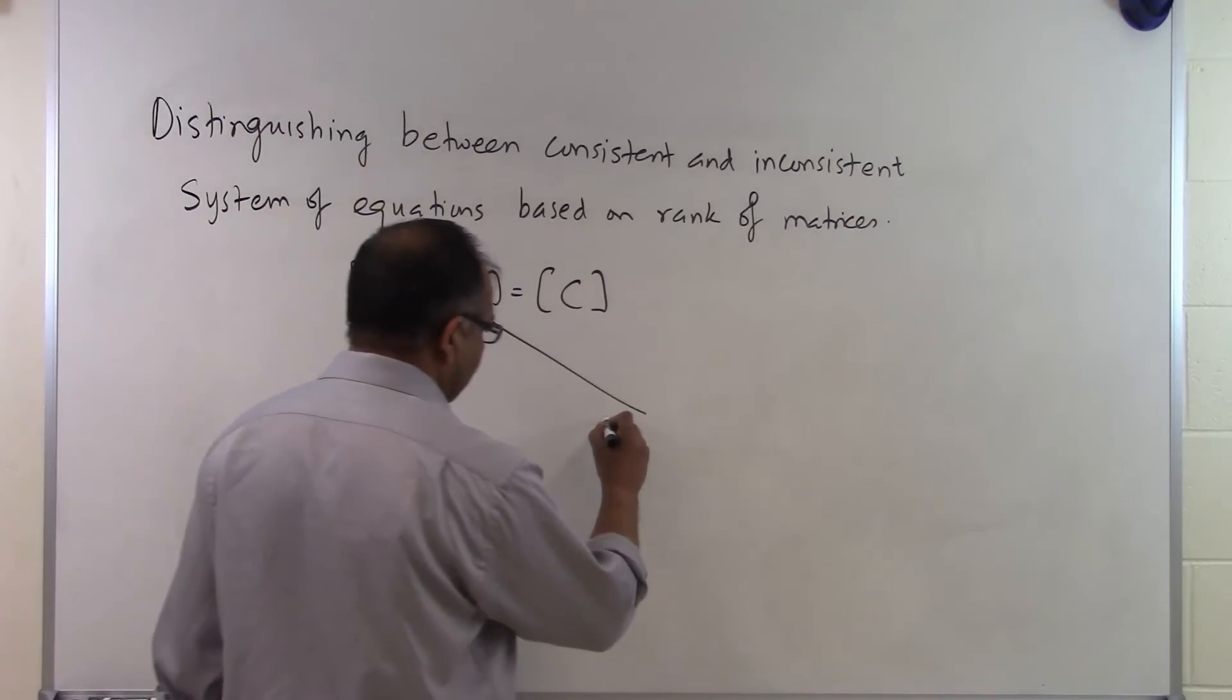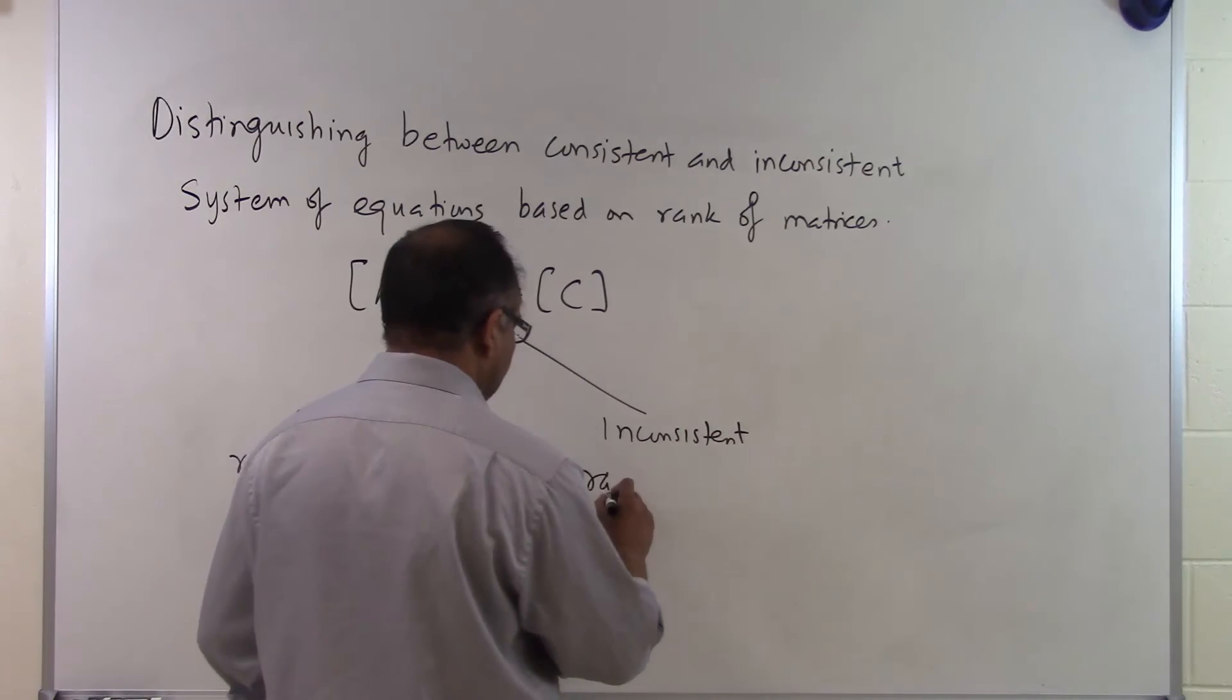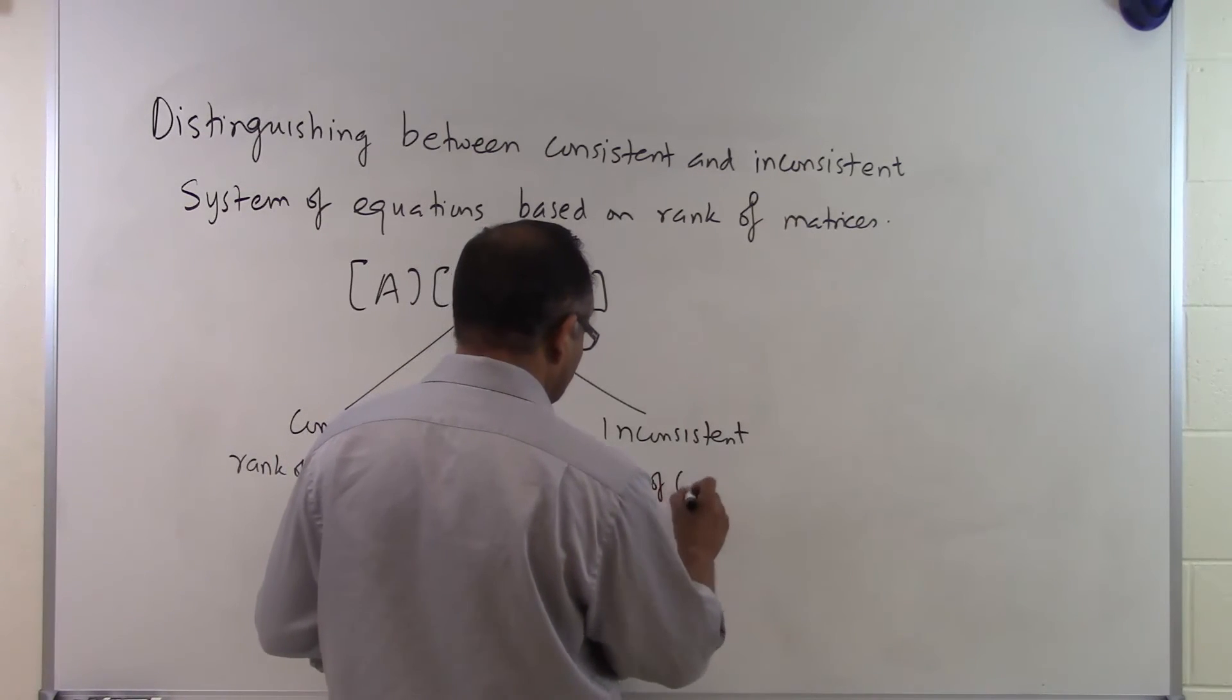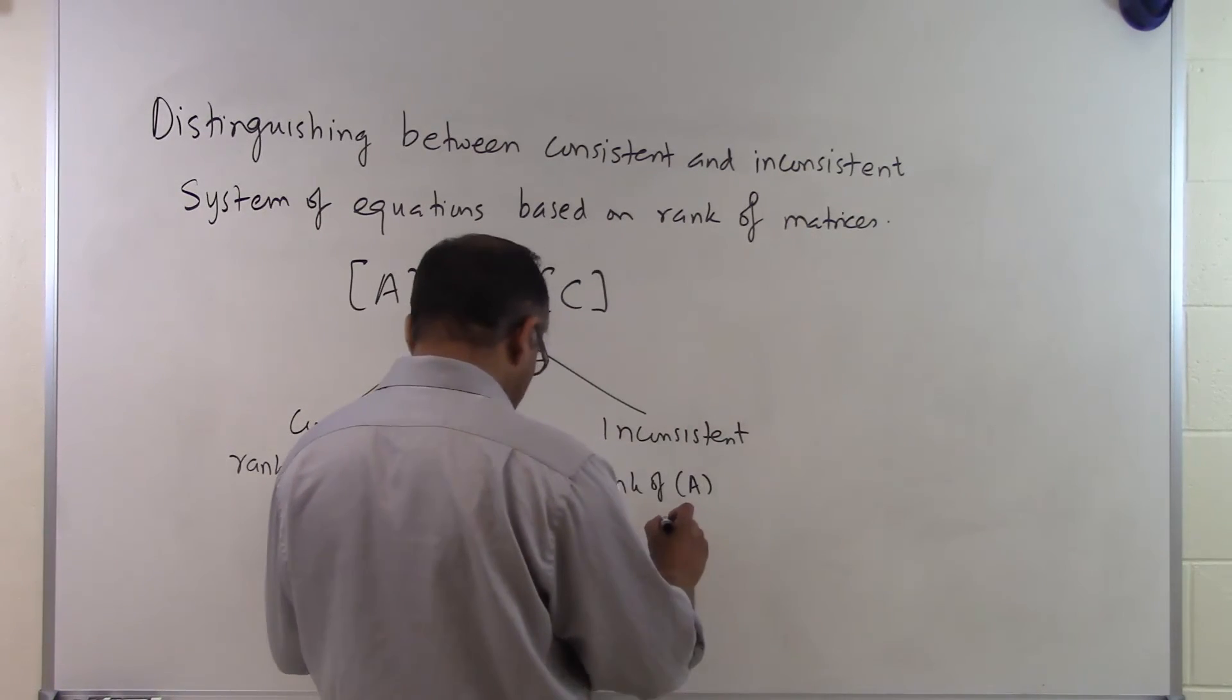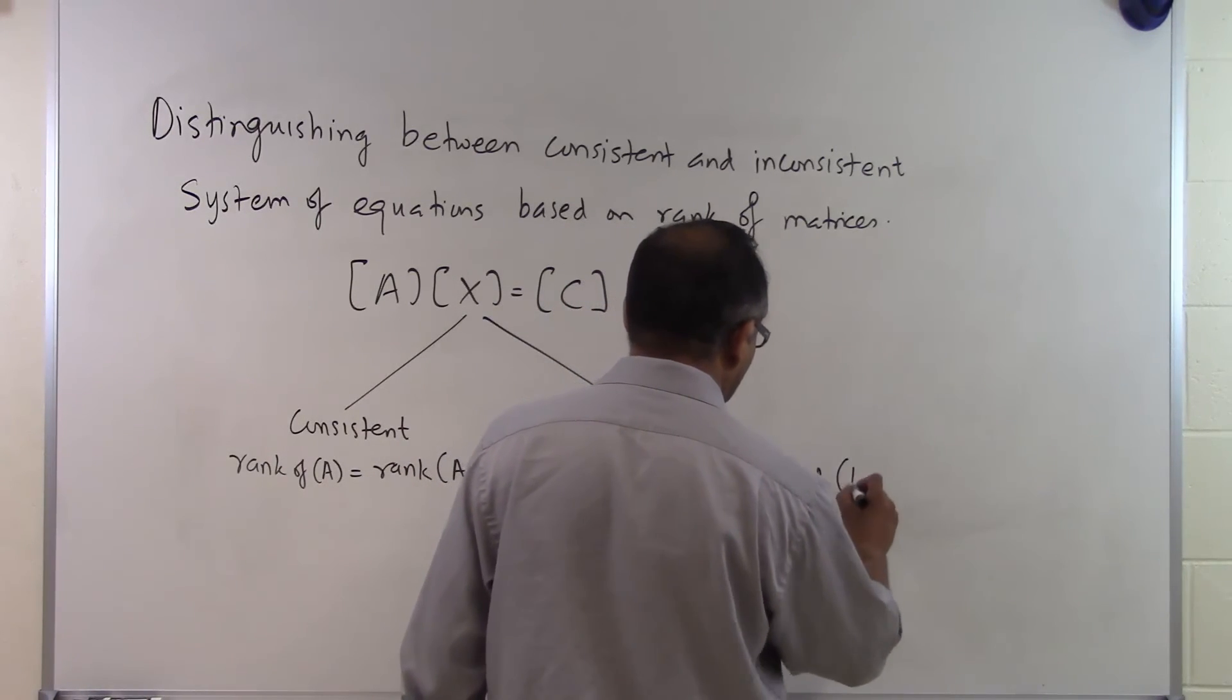Now this one will be inconsistent, so we'll have no solution at all if we find that the rank of A is less than the rank of the augmented matrix.